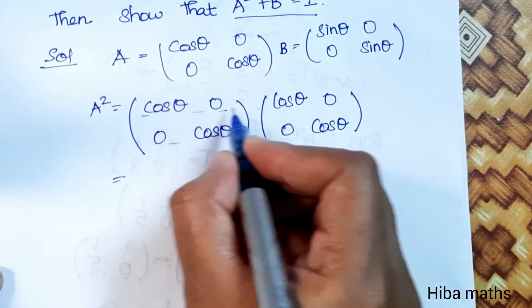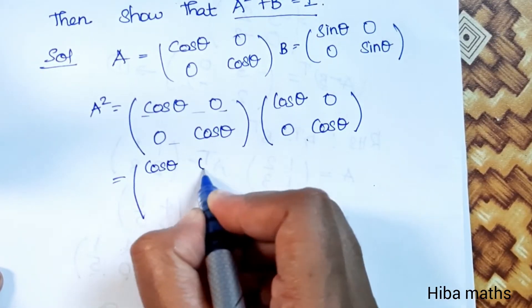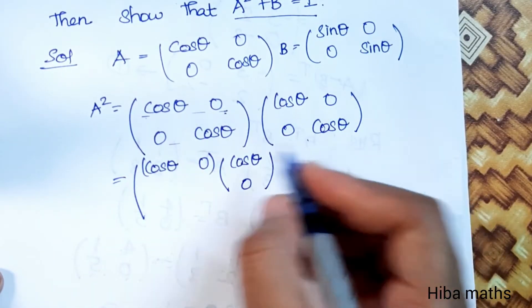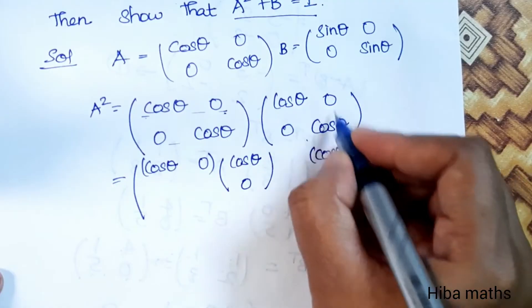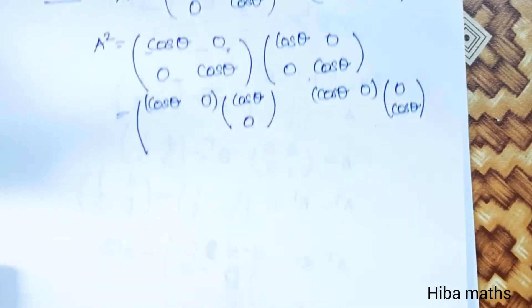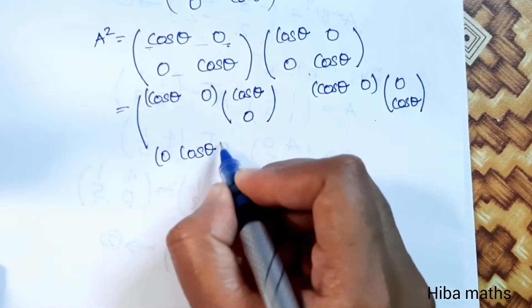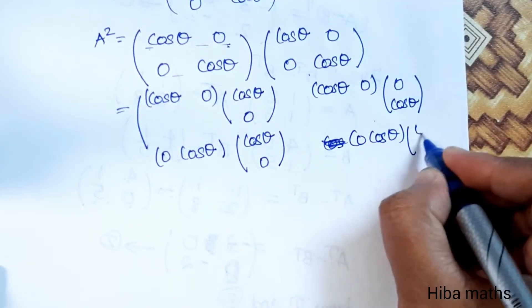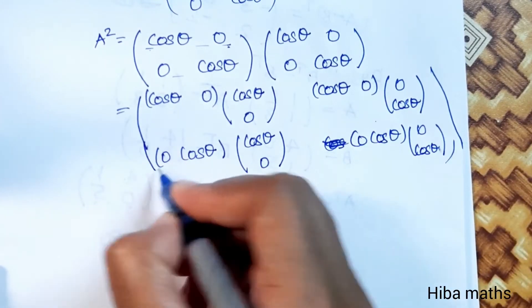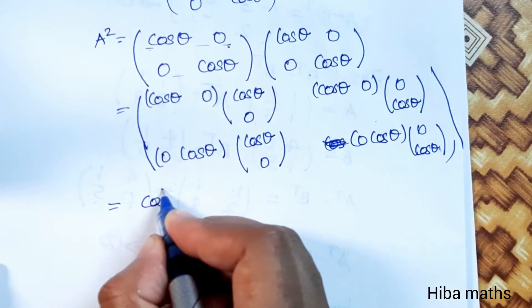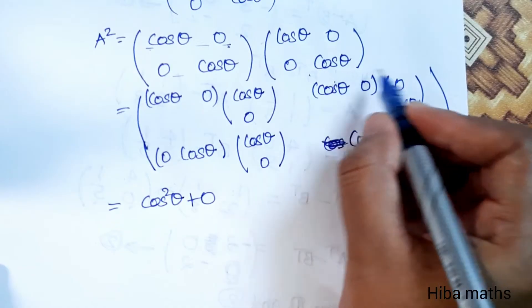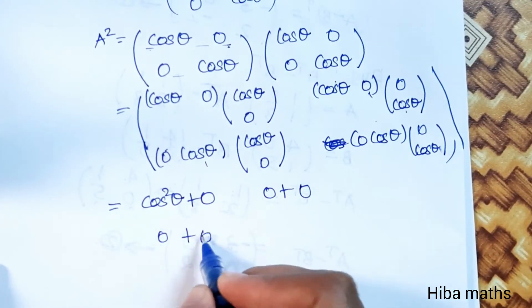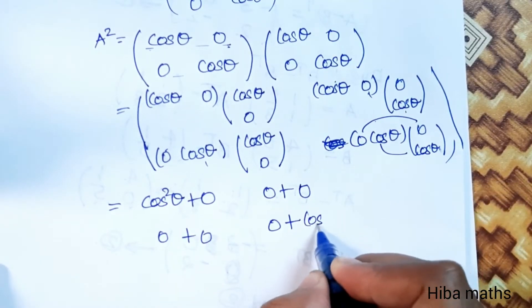Multiplying the two matrices row by column: first row, first column — cos theta times cos theta plus 0 times 0 gives cos squared theta. First row, second column — cos theta times 0 plus 0 times cos theta gives 0. Second row, first column — 0 times cos theta plus cos theta times 0 gives 0. Second row, second column — 0 times 0 plus cos theta times cos theta gives cos squared theta.